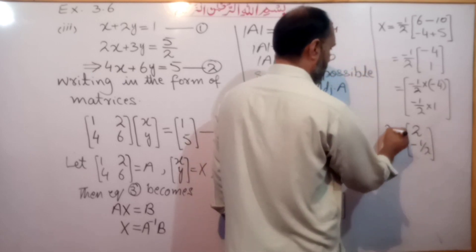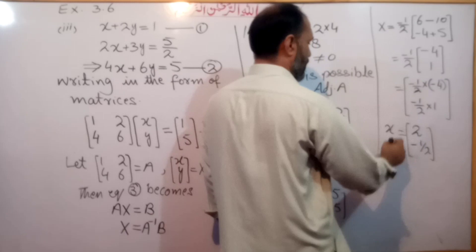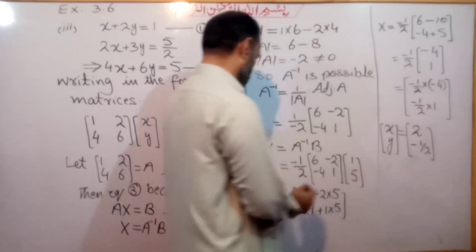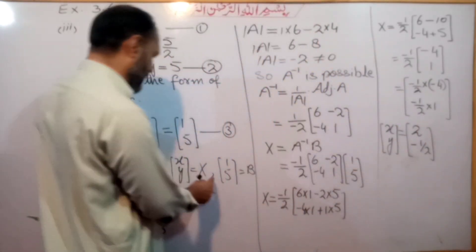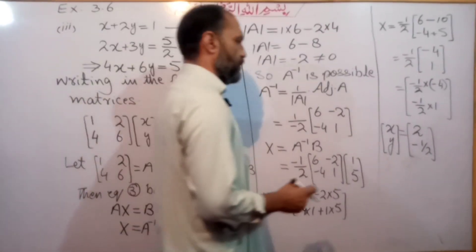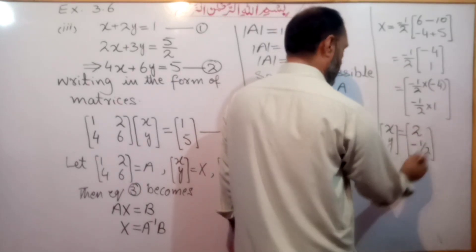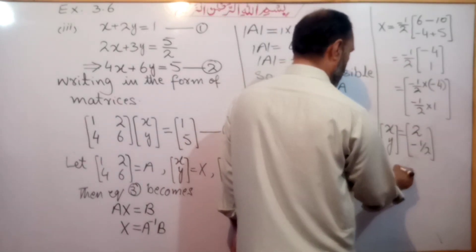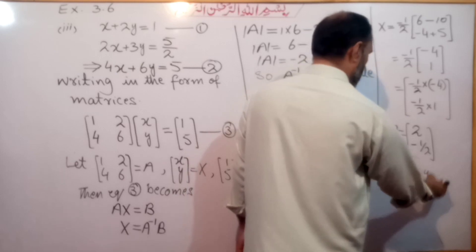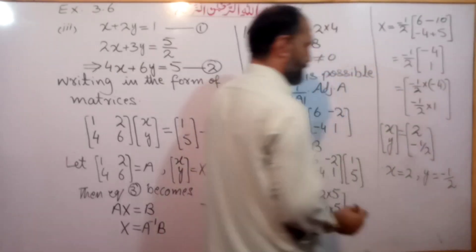Now the solution set: capital X = [x, y] = [2, minus 1/2]. From the matrix result, x = 2 and y = minus 1 over 2.